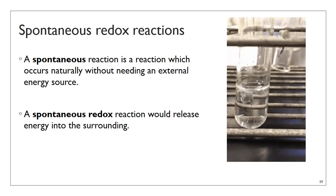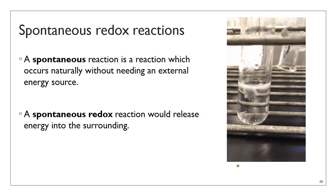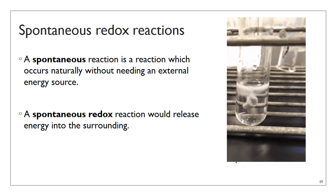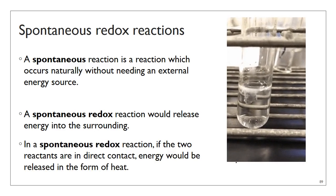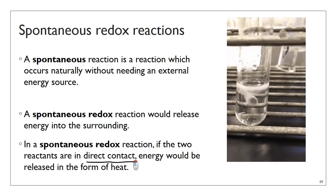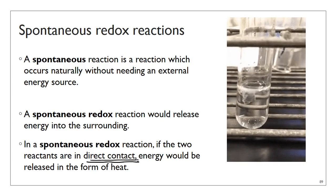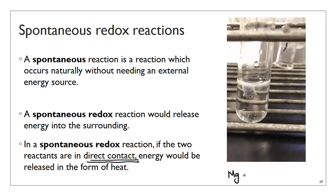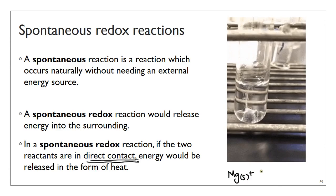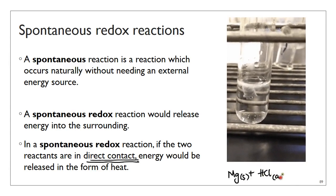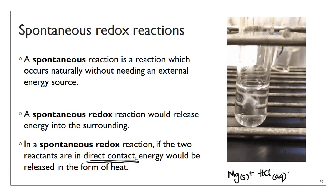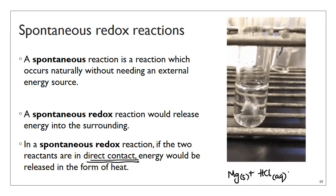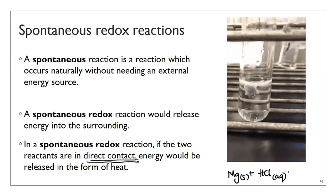If you have a spontaneous reaction that is also a redox reaction, a spontaneous redox reaction would release energy into the surroundings — it is exothermic. If the two reactants are in direct contact with each other, this energy is going to be released in the form of heat. This particular demonstration is a spontaneous redox reaction, and you do have the magnesium and the hydrochloric acid in direct contact with each other, therefore the reaction releases energy in the form of heat. You may ask yourself: how can you not have the reactants in direct contact with each other?